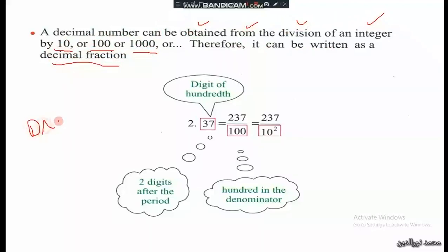For decimal number to decimal fraction: here we have two decimal digits, so we write 237 over hundred — two decimal digits means two zeros in the denominator — so it's two hundred thirty-seven over hundred.